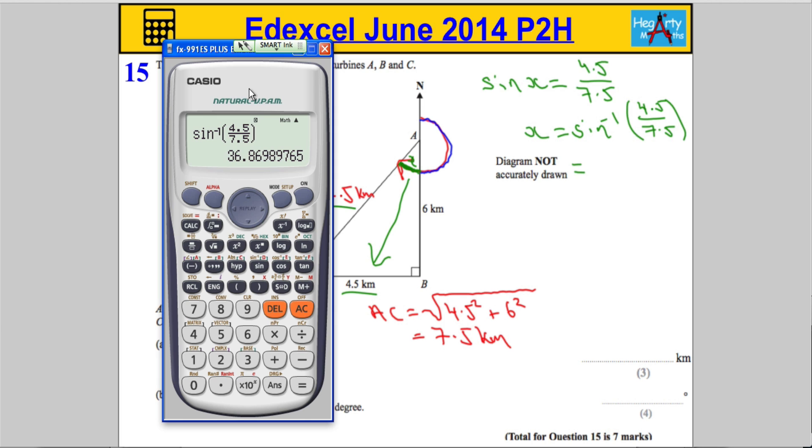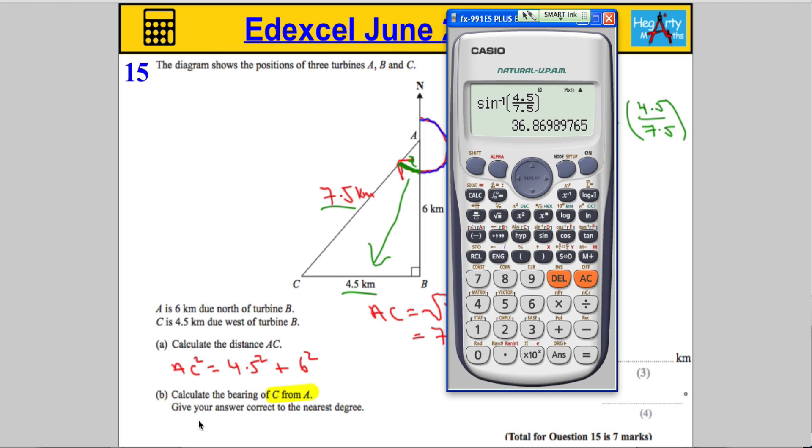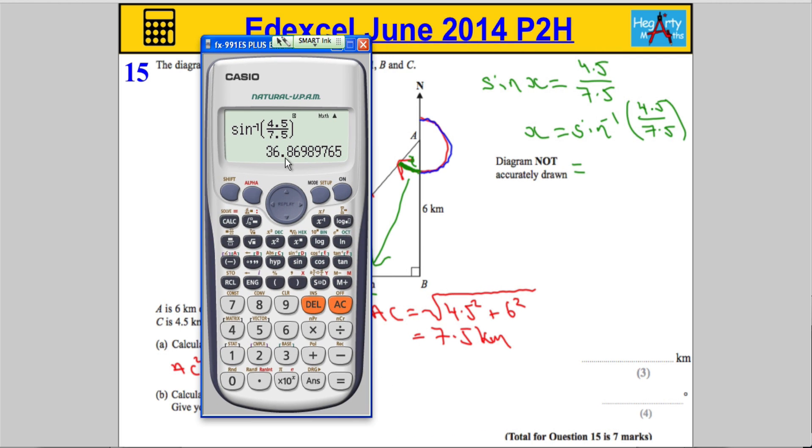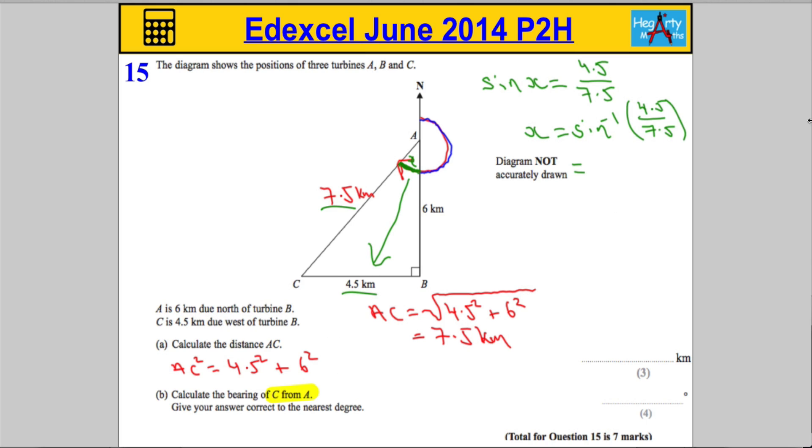Let's go to the nearest degree, because that's what it said in the question. Give your answer correct to the nearest degree. So, to the nearest degree, this is going to be 37 degrees. So, we get 37 degrees. So, I know X is 37.